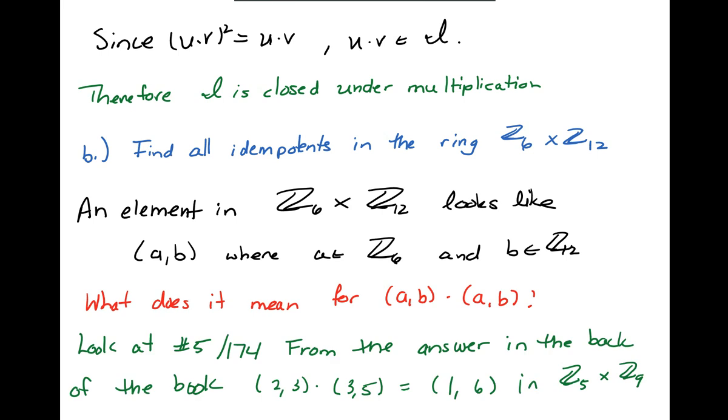So I went back to one of the computational problems, number 5, and I noticed the answer to number 5 was in the back of the book. So they had said that (2,3) times (3,5) in Z5 cross Z9, the answer was (1,6).